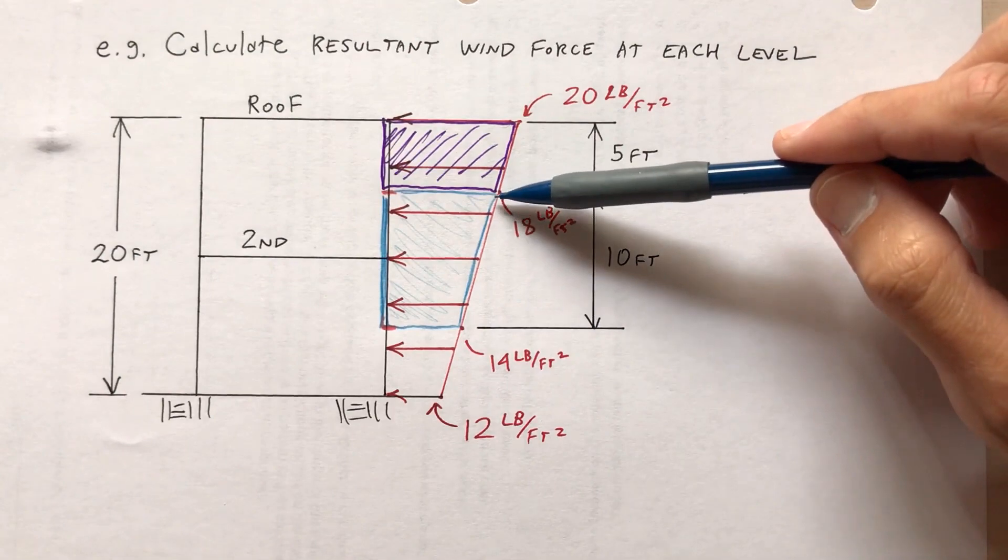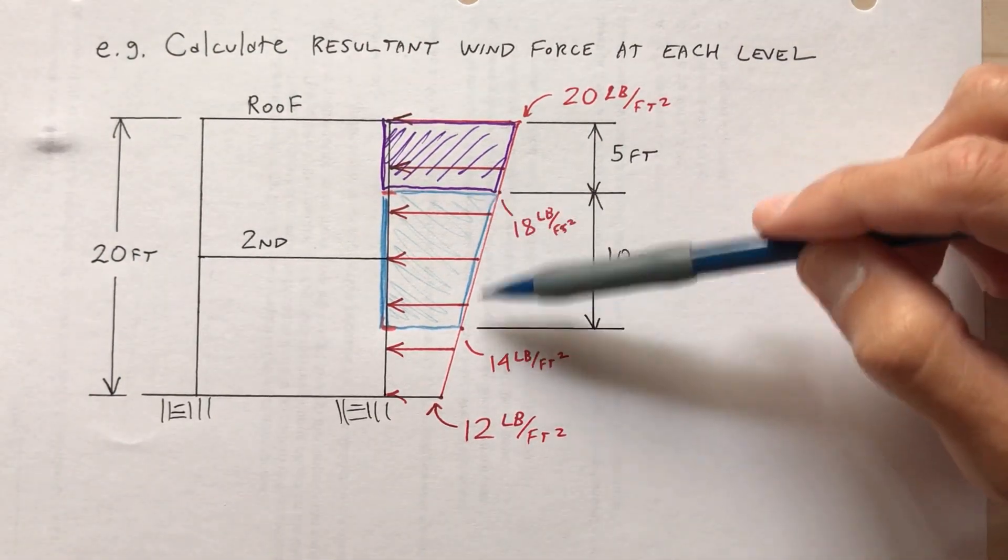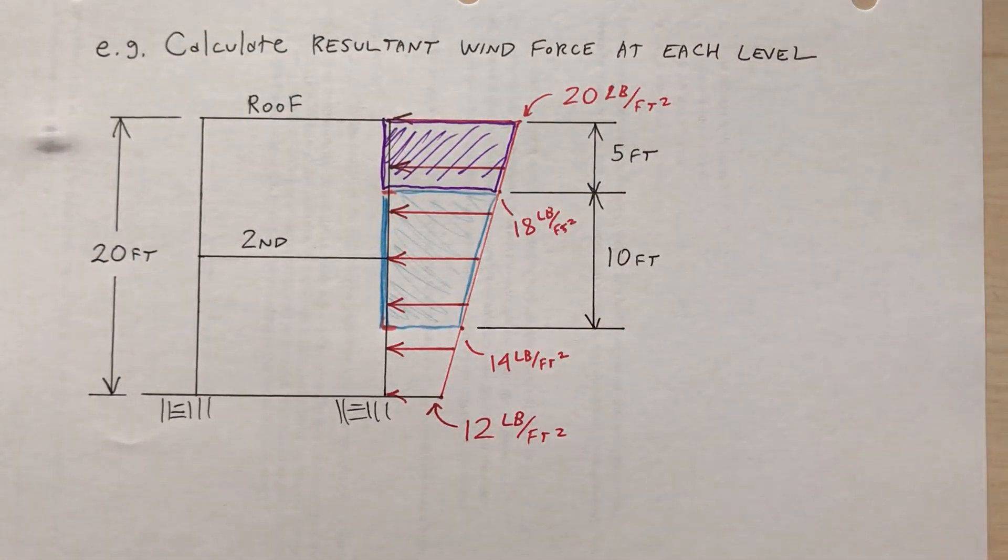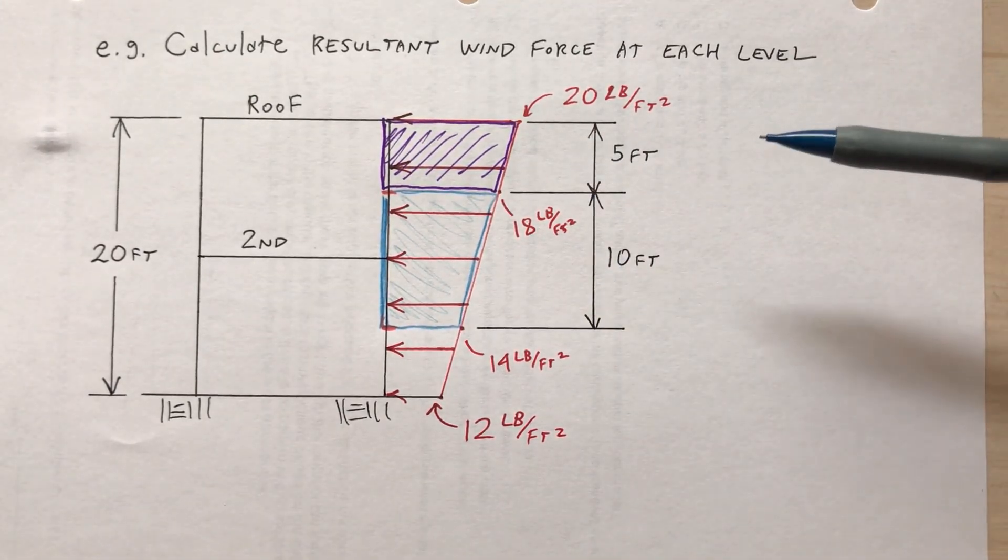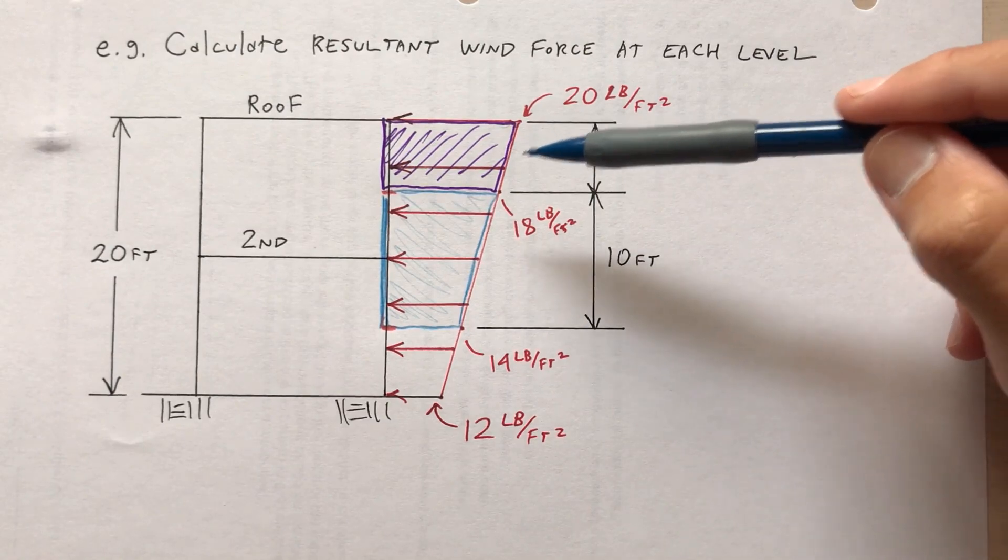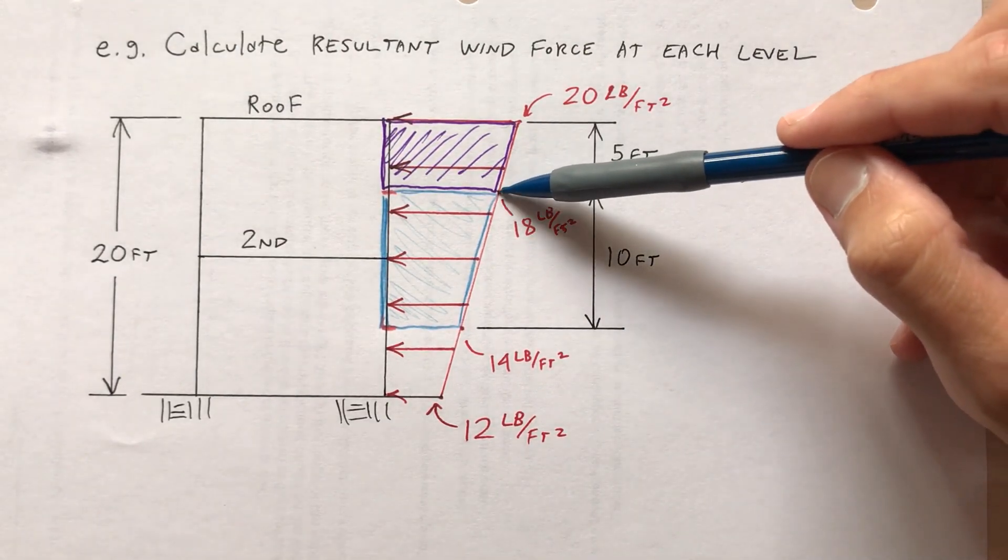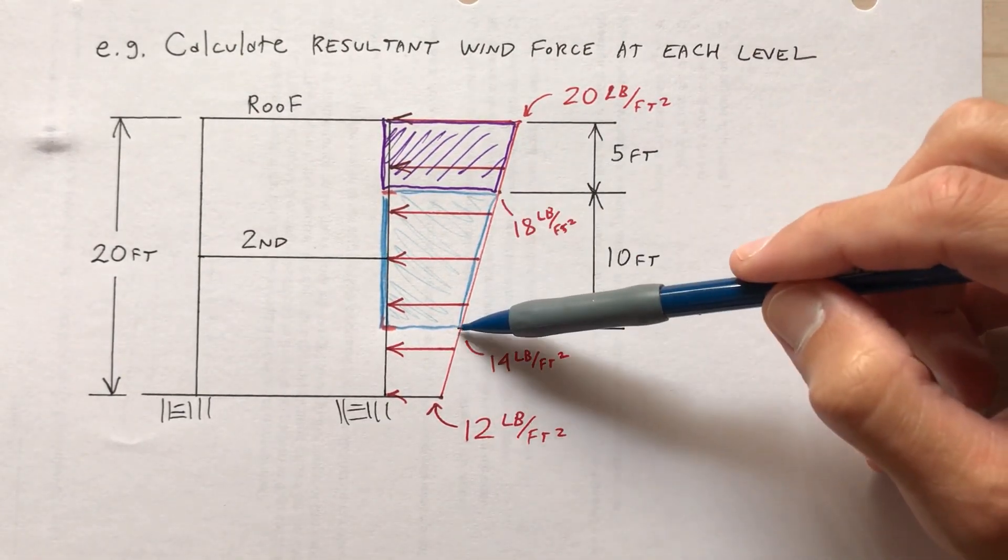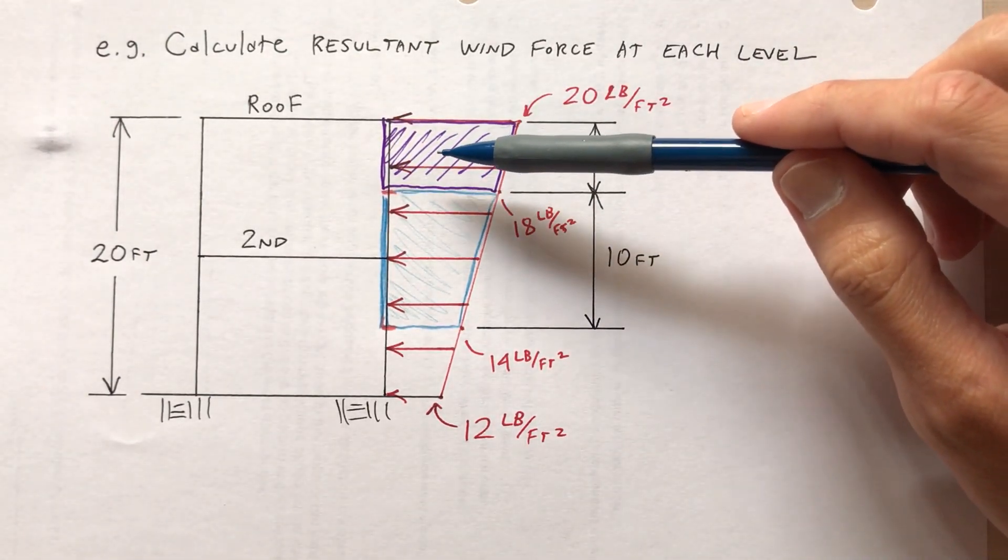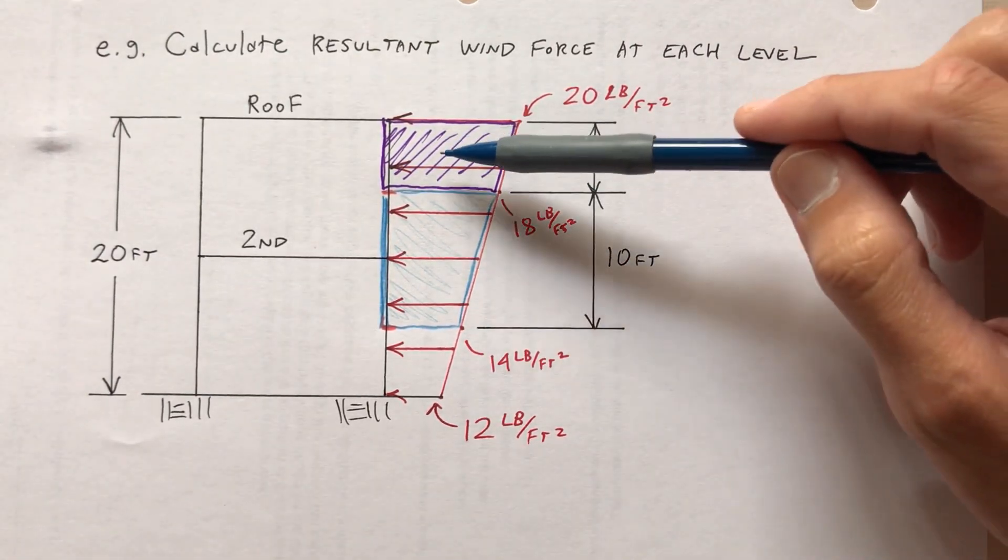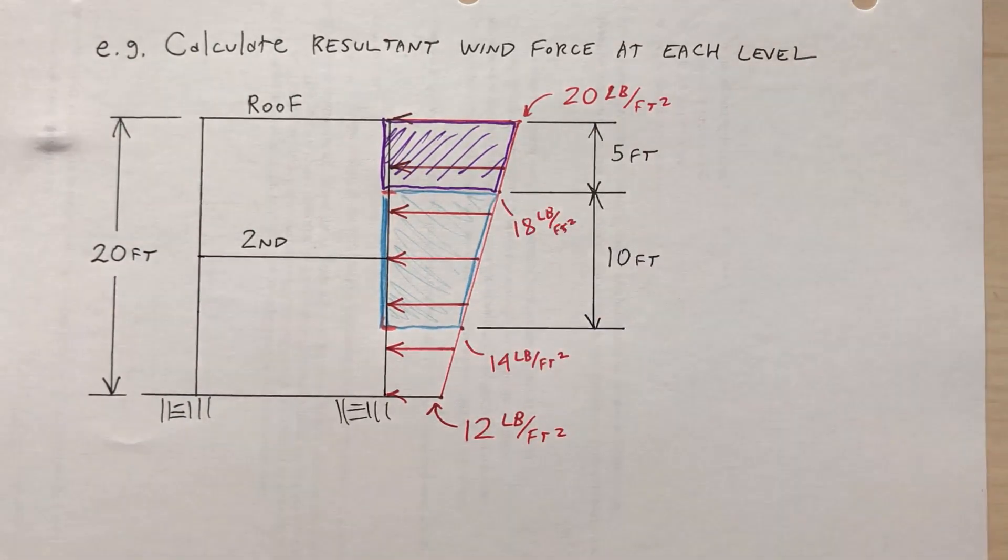And then this second portion of the wind load that is carried by the second floor at 10 feet high. I've got a trapezoidal load that's 10 feet high. The magnitude of the wind at the top 18 pounds per square foot, at the bottom 14 pounds per square foot. So I want to calculate the resultant of the purple, the wind load that I've shaded in purple, and the wind load that I've shaded in blue.